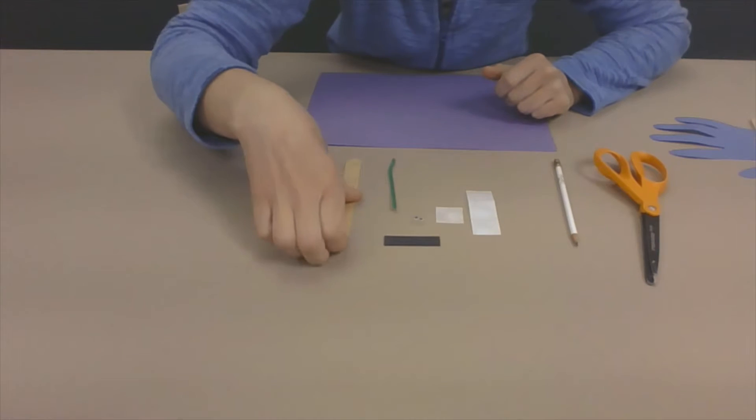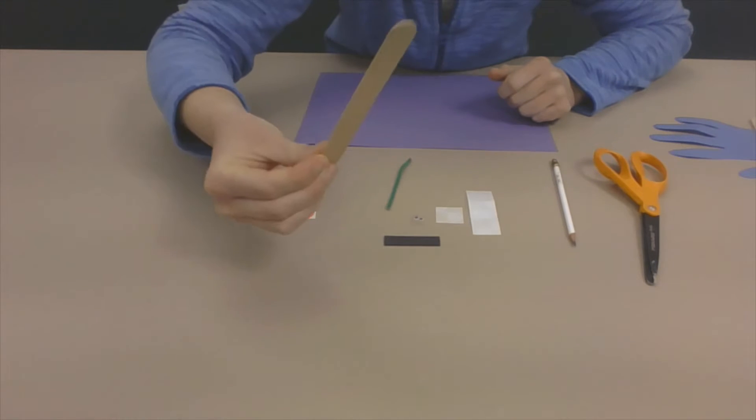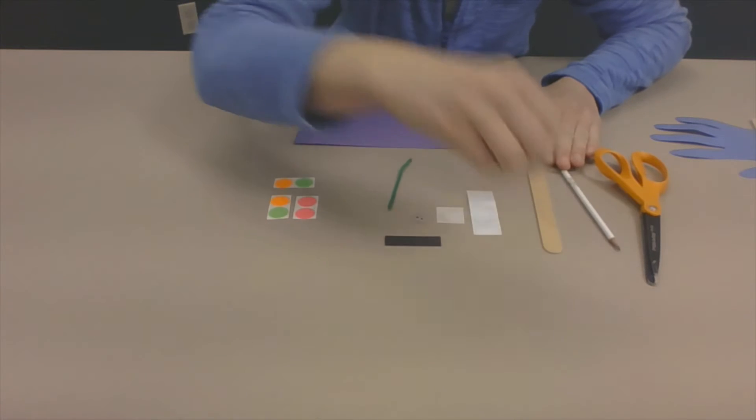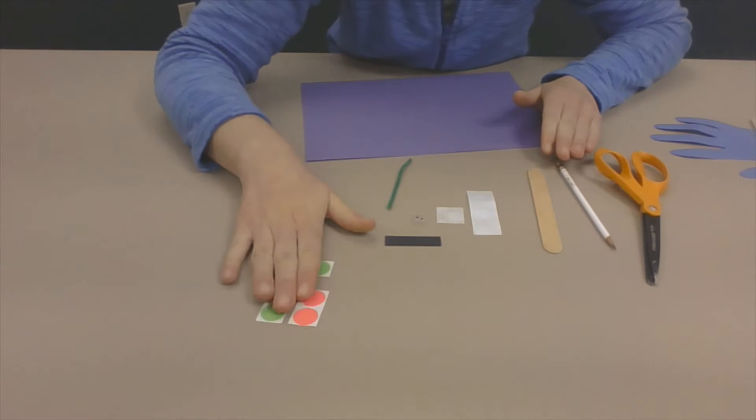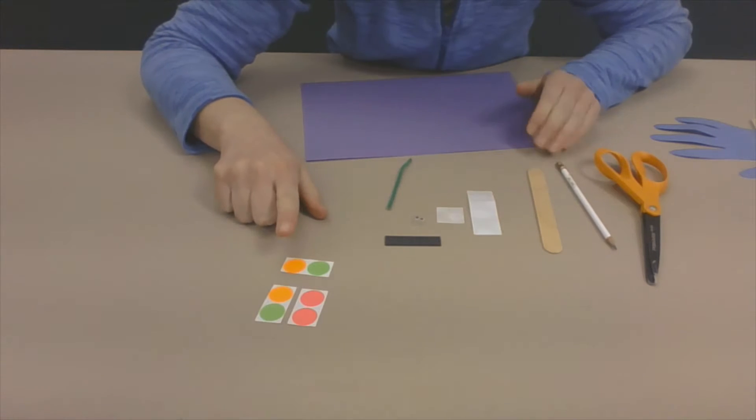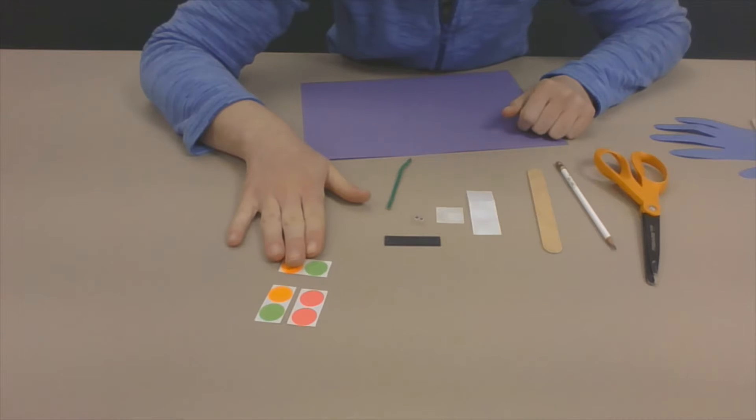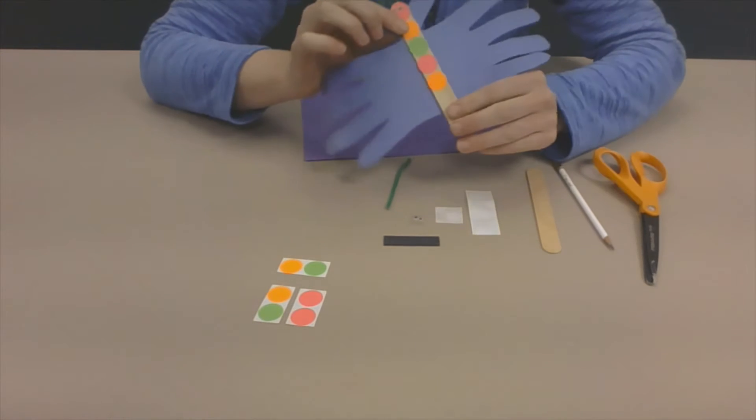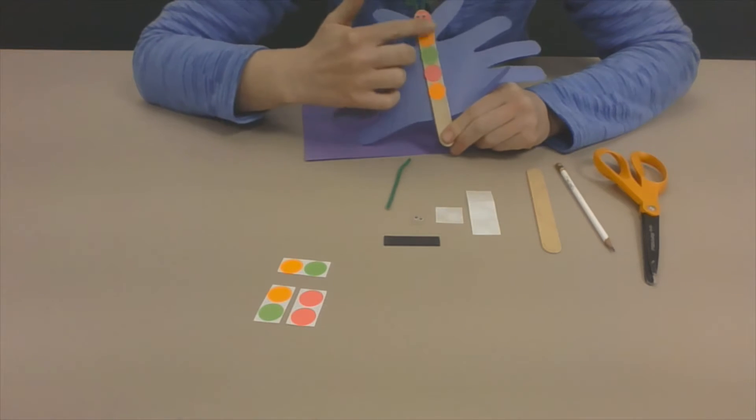You need a pencil. You need a popsicle stick. So I have a big one, but you could use a littler popsicle stick if you want. I'm using some garage sale stickers that I bought at a store, and this is to decorate my butterfly with. So you see right here how my butterfly is decorated.